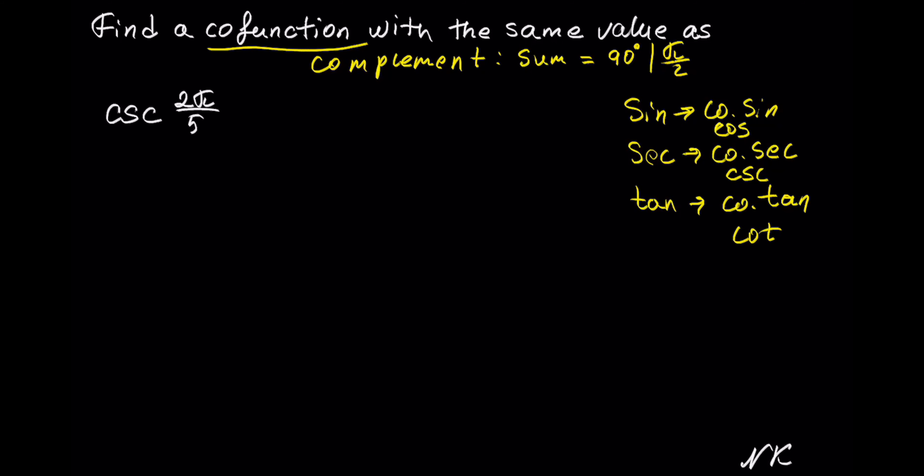So in reverse, the complement of cosecant is the secant function. Now that we know which complement pair we are working with, we can set our relationship.